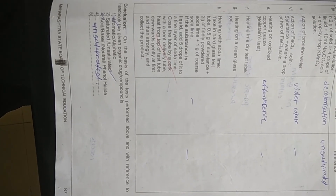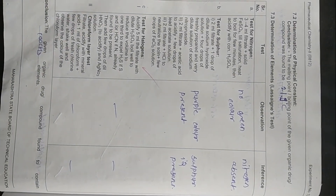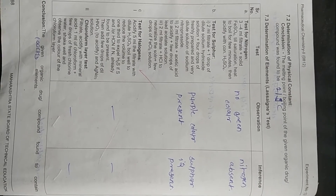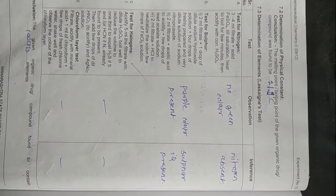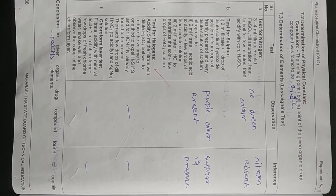Next is the determination of the physical constant. The liquid compound's boiling point was determined to be 219 degrees Celsius. So the boiling point of the unknown compound is 219°C. This leads us to the determination of elements.